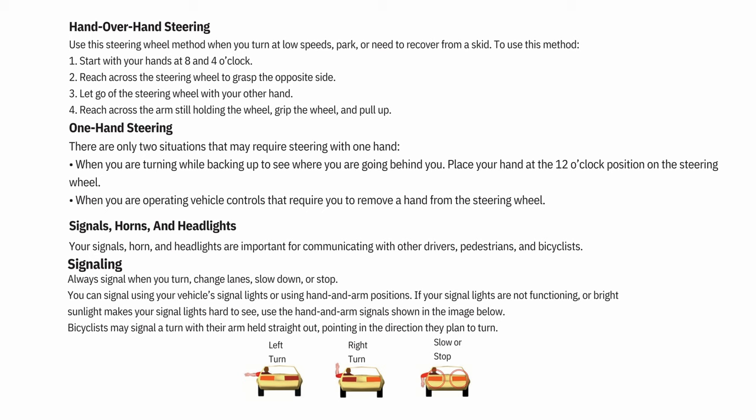Your signals, horn, and headlights are important for communicating with other drivers, pedestrians, and bicyclists. Signaling: Always signal when you turn, change lanes, slow down, or stop. You can signal using your vehicle's signal lights or using hand and arm positions. Bicyclists may signal a turn with their arm held straight out, pointing in the direction they plan to turn.